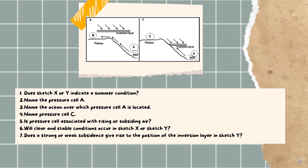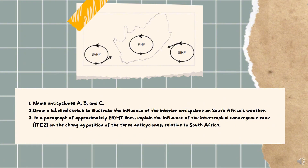Question seven asks whether a strong or weak subsidence gives rise to the position of the inversion layer in sketch Y. It is obviously a strong subsidence, hence that inversion layer is present. These questions were very easy and introductory — nothing too hectic, just testing basic knowledge without a lot of critical thinking. These are the kind of straightforward questions you can look forward to in an exam.